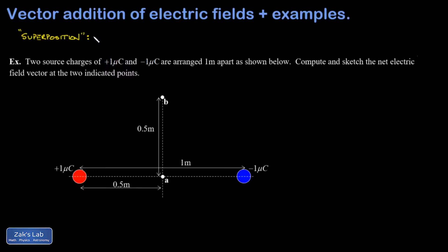So when you have more than one source, you just compute the vector contribution due to each of those sources and then add those contributions vectorially.